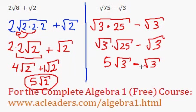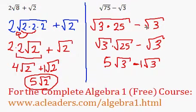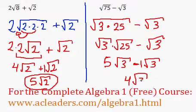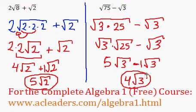There's a hidden 1 in front of that √3 we're subtracting — it's really 1√3. So 5 minus 1 gives us 4, and the final answer is 4√3.